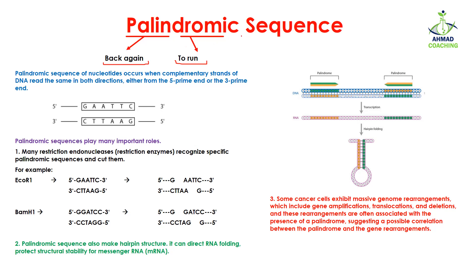The palindromic sequences are actually the sequence of nucleotides that occurs when the complementary strands of DNA read the same in both directions. It means if you are reading the sequence in one direction, you will read back the same way in the reverse direction. The sequence reading from one end and from the other end are the same, whether you read it from the 5 prime end or the 3 prime end.